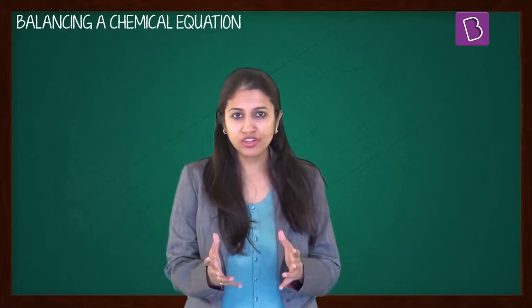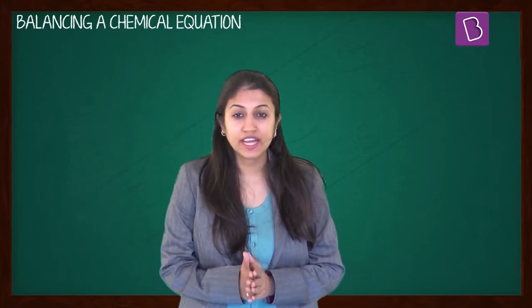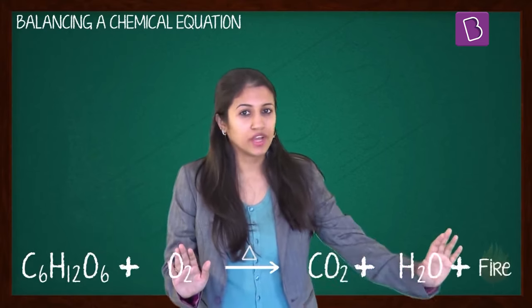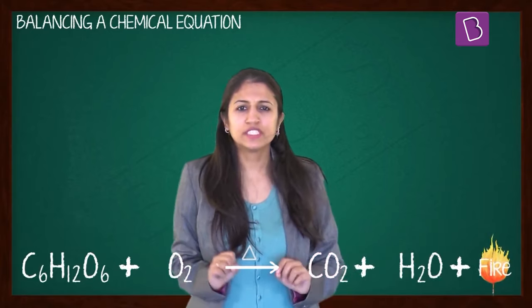Let's understand this better with the first thing you did to survive on that island. You burnt wood to give fire. The chemical equation for that can be represented as C6H12O6 plus O2, giving you CO2 plus H2O plus fire. Something's not right here. Let's see why.